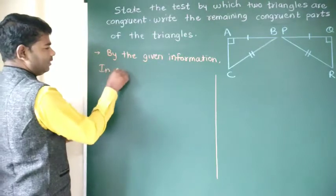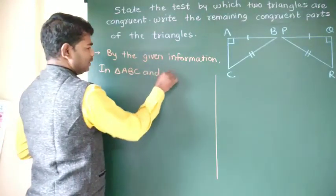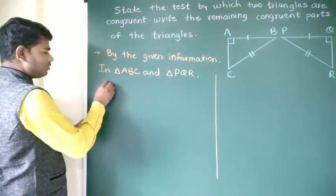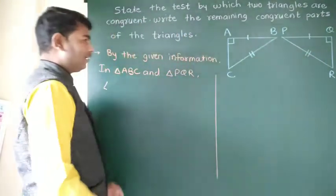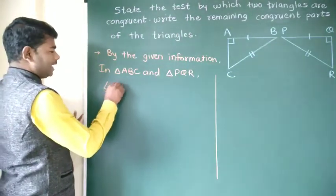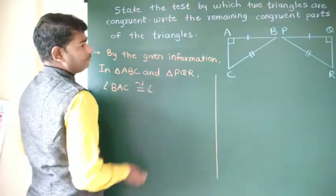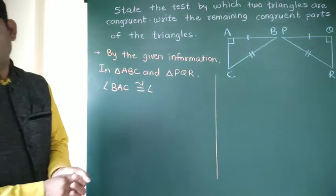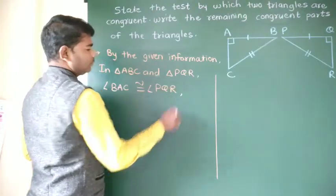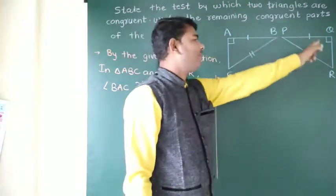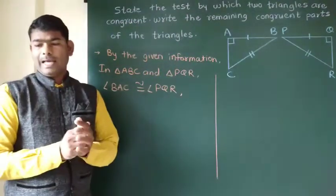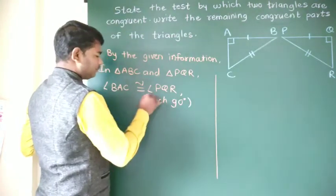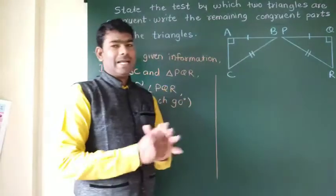In triangle ABC and triangle PQR, we have two triangles — triangle ABC and triangle PQR — each having a 90 degree angle. So if we have two triangles with two right angles and two sides of each triangle,